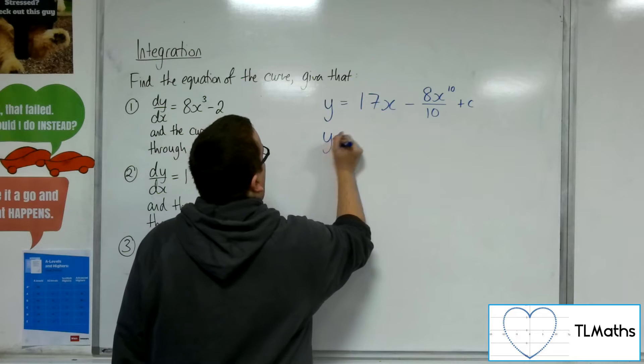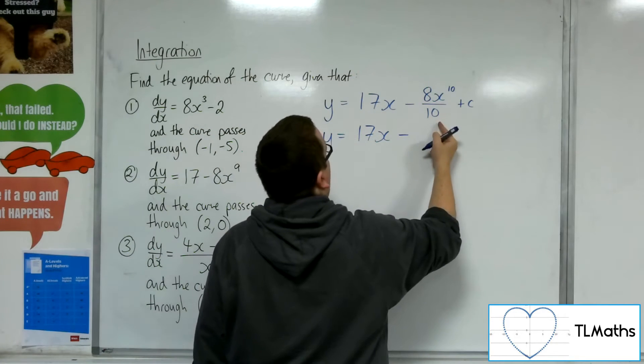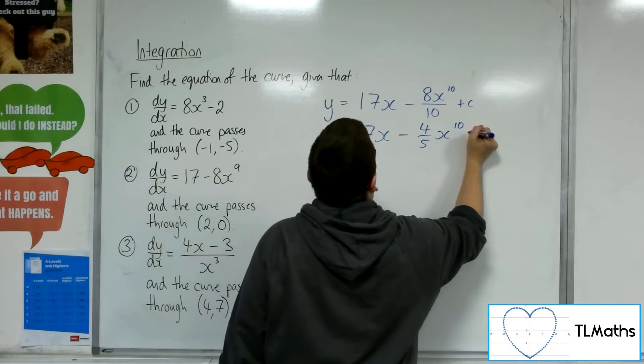Let's tidy that up. So y = 17x - well, 8 tenths simplifies to 4 fifths, x¹⁰ + c.